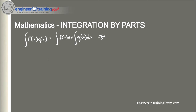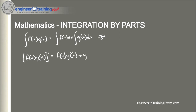So how do we proceed when we're given a function that is a product of two functions? Since this is a video about integration by parts, we use integration by parts. In order to understand this technique, let's recall first what the product rule is. The product rule states that given a product of two functions, the derivative equals the first function times the derivative of the second, plus the second times the derivative of the first.